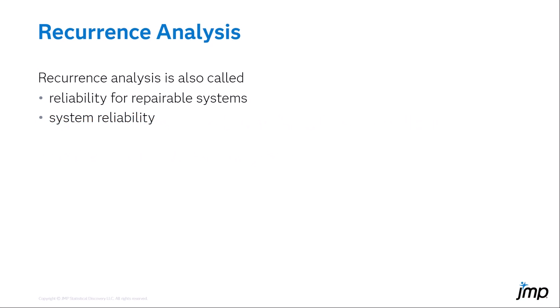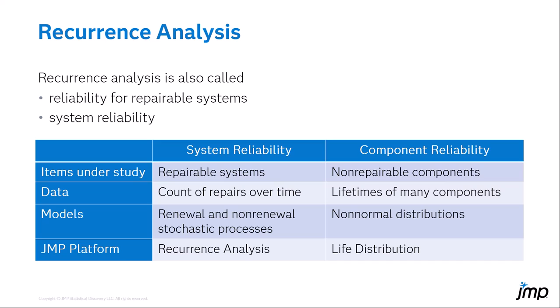The JMP platform used to analyze data from repairable systems is the recurrence platform. Recurrence analysis is used to study reliability for repairable systems, also called system reliability. Repairable system reliability differs from non-repairable system reliability, also called component reliability.